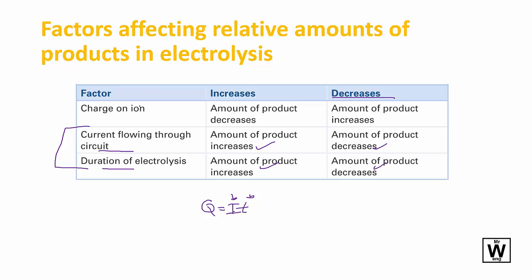What students mess up is the charge of the ion. If you have an ion that has a lot more charge to it, you actually have to put more current through to get those ions to move, so the increased charge of the ion in the solution is actually going to decrease your amount of product.